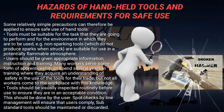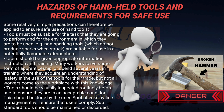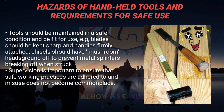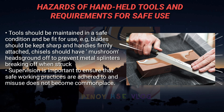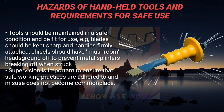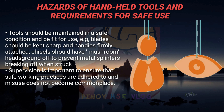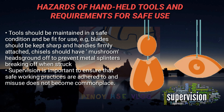Spot checks by line management will ensure that users comply. Substandard tools should be maintained or discarded. Tools should be maintained in a safe condition and be fit for use – for example, blades should be kept sharp and handles firmly attached. Chisels should have mushroom heads ground off to prevent metal splinters breaking off when struck. Supervision is important to ensure that safe working practices are adhered to and misuse does not become commonplace.